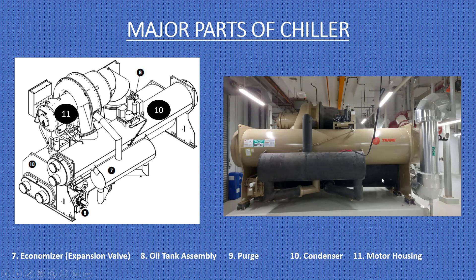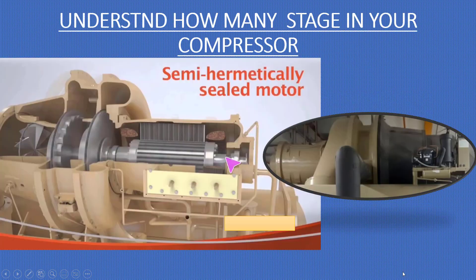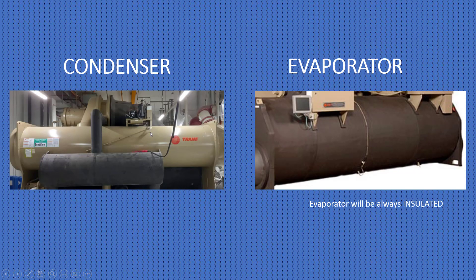Some other major parts you can see here include the economizer, oil tank assembly, condenser, and motor housing. We have taken both manual pictures and site photos so you can compare them. Understand how many stages are in your compressor. This is a semi-hermetically sealed motor with a two-stage compressor. Refer to your manual to identify what type of condenser and evaporator you have. The evaporator will always be insulated to avoid heat ingress.